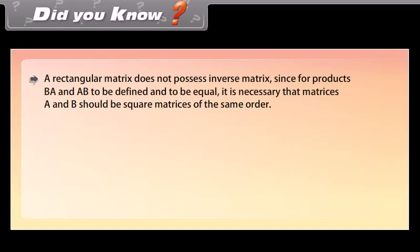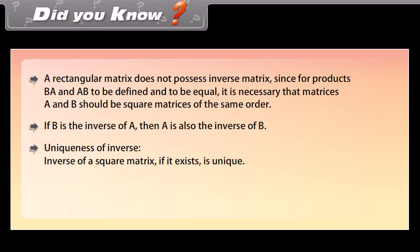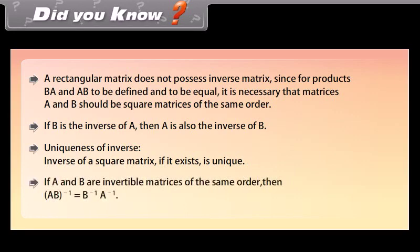Did you know? A rectangular matrix does not possess an inverse, since for products BA and AB to be defined and equal, it is necessary that matrices A and B are square matrices of the same order. If B is the inverse of A, then A is also the inverse of B. The inverse of a square matrix, if it exists, is unique. If A and B are invertible matrices of the same order, then inverse of AB equals inverse of B times inverse of A.